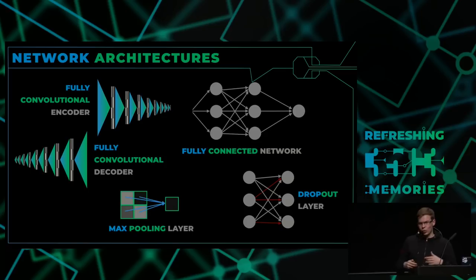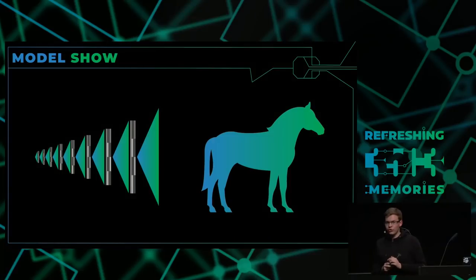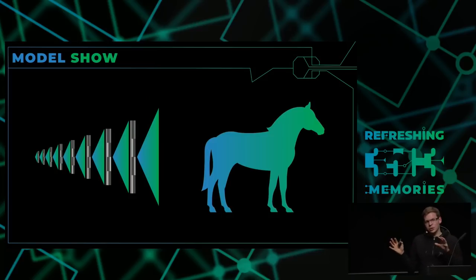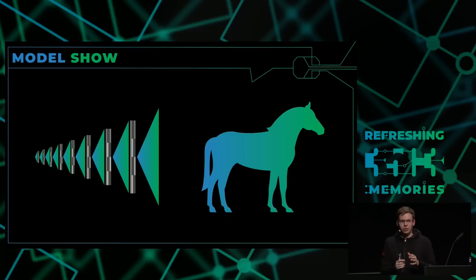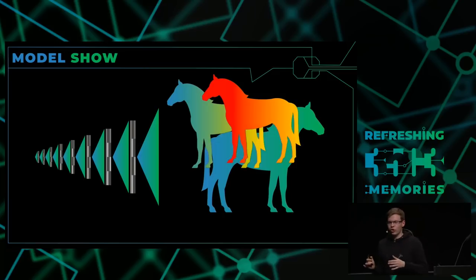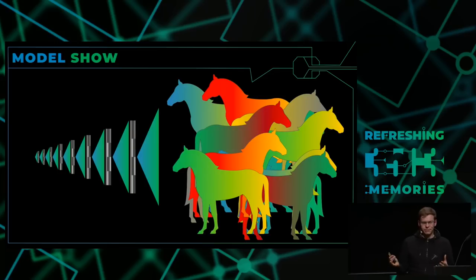Als nächstes möchte ich einige Modelle zeigen, wie wir die trainieren und wie die funktionieren. Wir fangen an mit einem vollständigen Faltungs-Dekodierer. Ich möchte dieses Modell nehmen, eine Zahl hineintun, und bekomme am Ende eine Zahl hinaus — zum Beispiel ein Bild von einem Pferd.